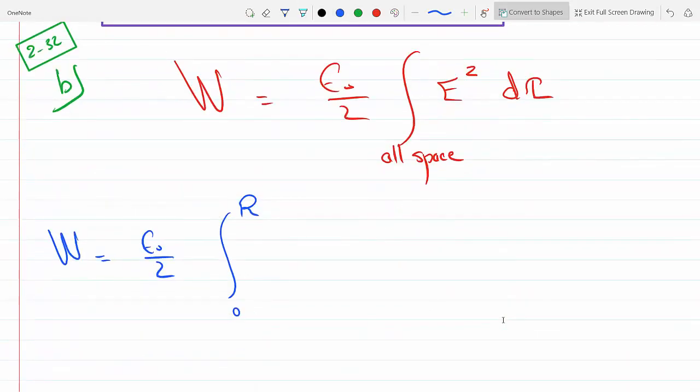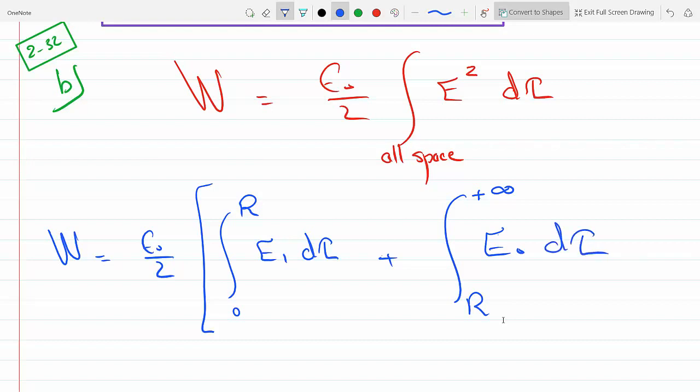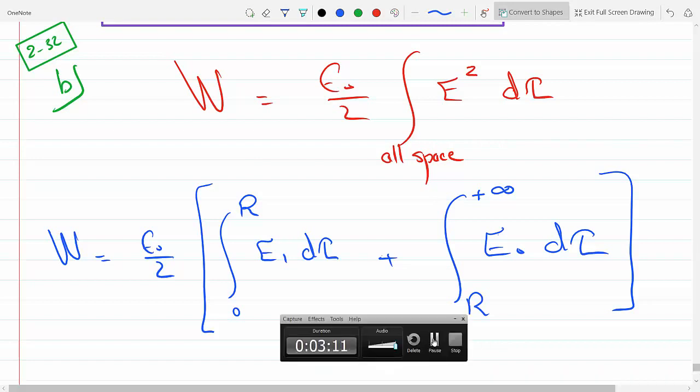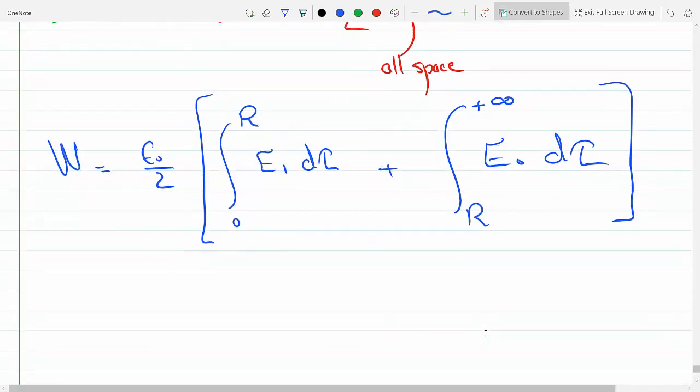That means you will split this integral from 0 to R: E1 d tau over the sphere, plus R to infinity, which is the remaining of space, of E0 d tau. So this is how you have to go about doing this, so you still need to figure out the electric field.